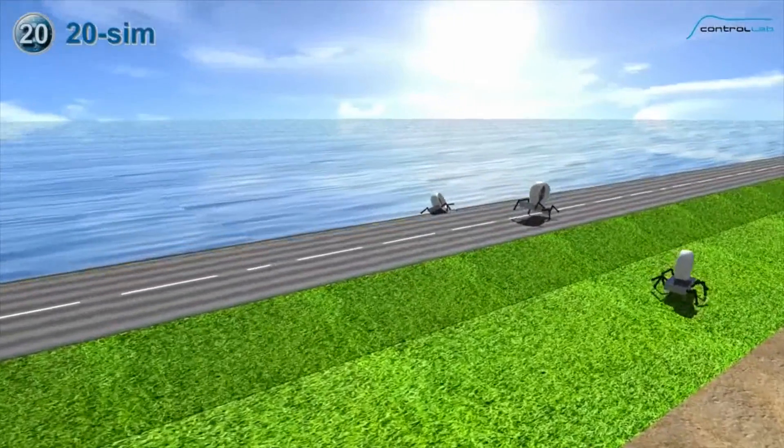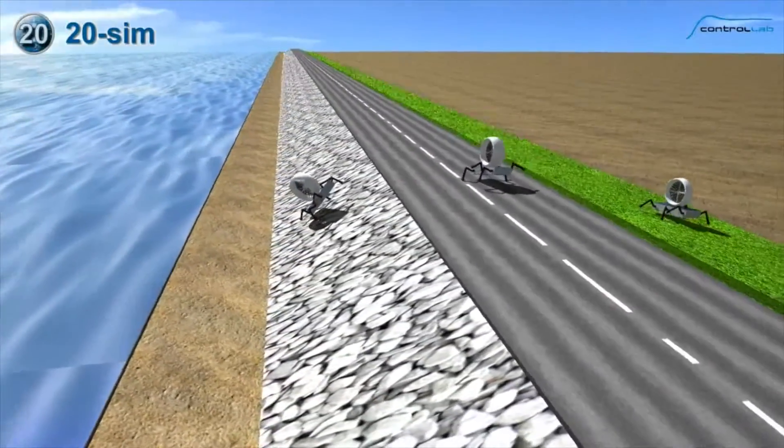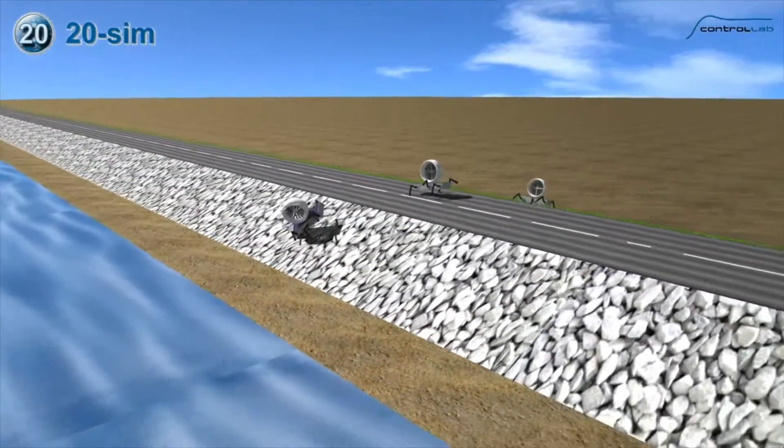Can you imagine robots that can harvest all the energy they need from their environment, using for example solar panels? You could deploy such a robot to do fully energy autonomous inspection on for example a dike.